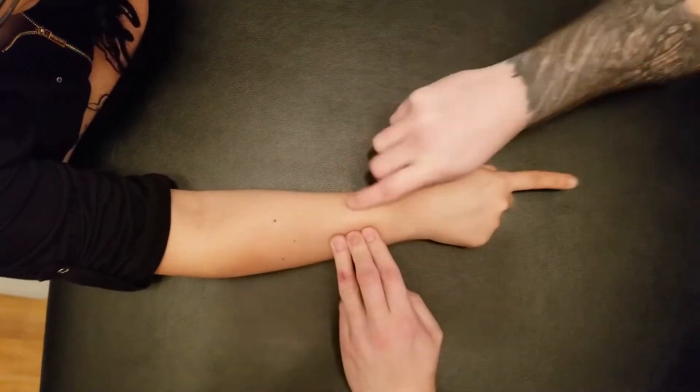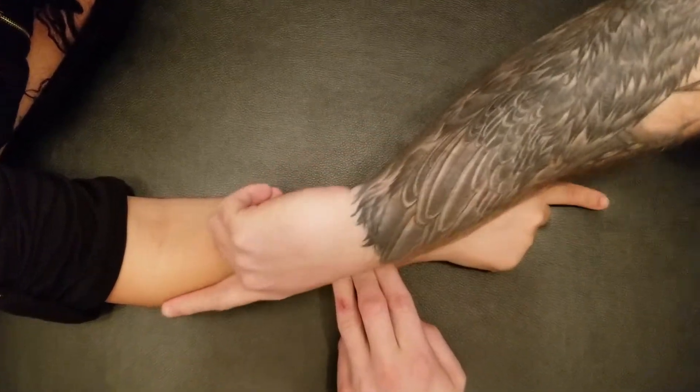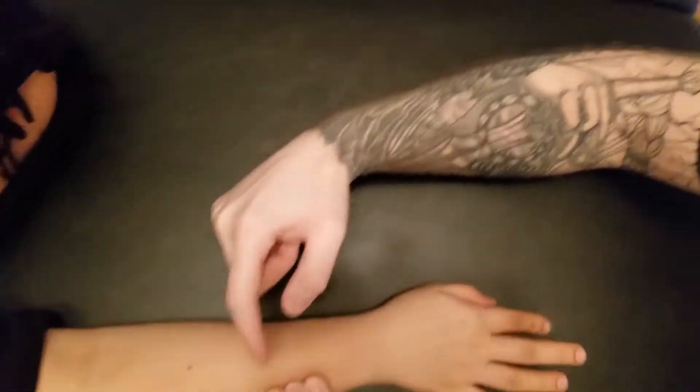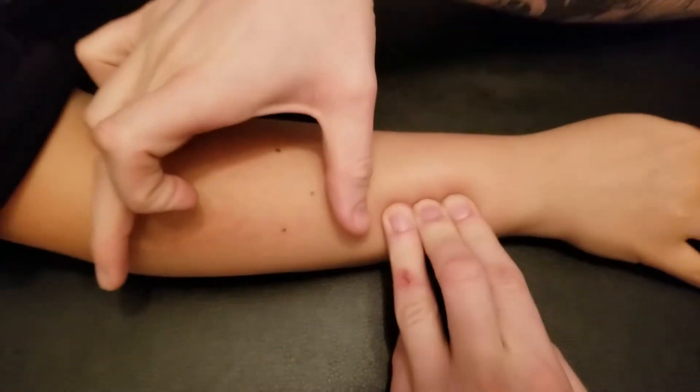Now you want to make sure that you're not getting confused with extensor digitorum. So I'm going to leave my fingers here and I'm going to ask you to move all of them. Extensor digitorum's muscle belly will be found in the more proximal forearm.